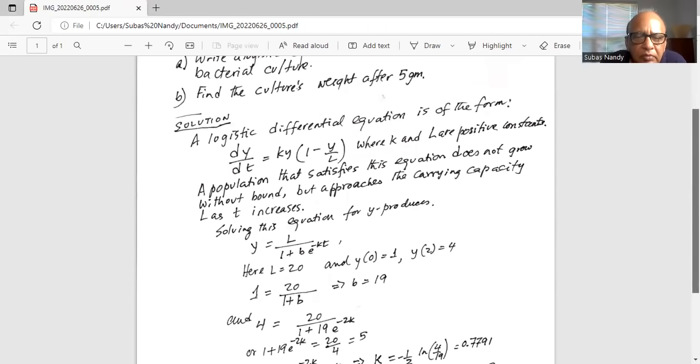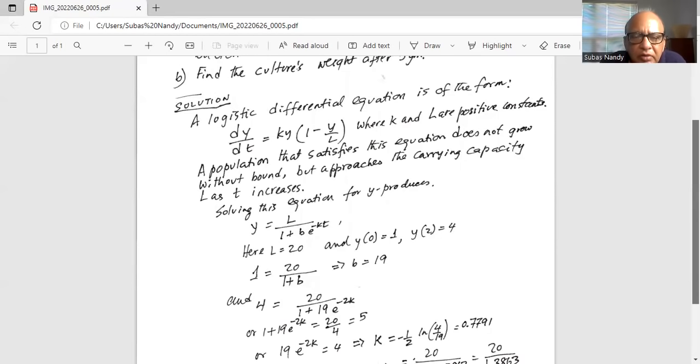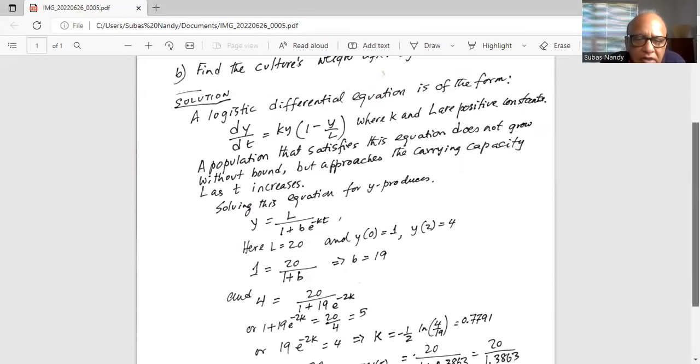So we substitute those values in. For y equals 1, we have 1 equals 20 divided by 1 plus b times e to the power of minus k times 0. Since e to the power of 0 is 1, we get 1 equals 20 divided by 1 plus b, or 1 plus b equals 20, hence b equals 19.